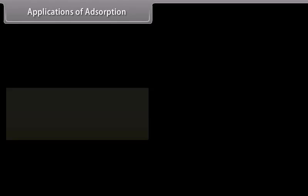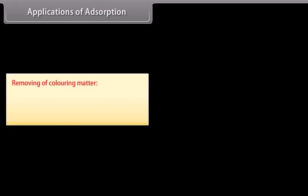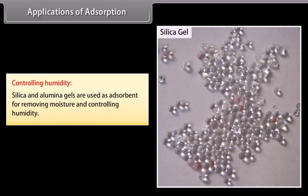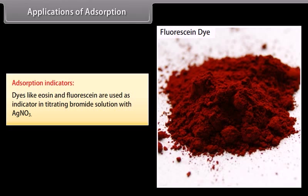Applications of adsorption — Gas masks: These contain activated charcoal or a mixture of adsorbents and are used for breathing in an atmosphere containing poisonous gases. Removing coloring matter: Animal charcoal removes colors from solutions as coloring impurities are preferentially adsorbed on charcoal. For example, bone charcoal is used as a decolorizer in the sugar industry. Controlling humidity: Silica and alumina gels are used as adsorbents for removing moisture and controlling humidity. Adsorption indicators: Dyes like eosine and fluorescein are used as indicators in titrating bromide solution with AgNO₃.